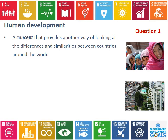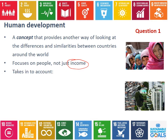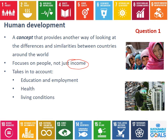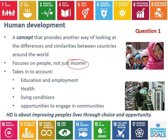Human development in the context of this subject is basically a concept that gives us another way of looking at the differences and similarities between different countries around the world. We've already looked quite a lot at defining countries by their income, but there are limitations with that — income doesn't tell us everything. So human development as a concept focuses on people, not just on income. The things we take into account are education and employment, health, living conditions, and opportunities to engage in communities. A really good summary is that human development is about improving people's lives through choice and opportunity.